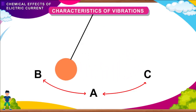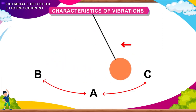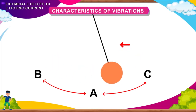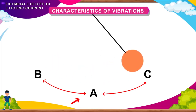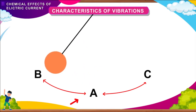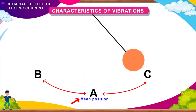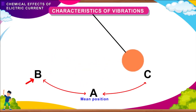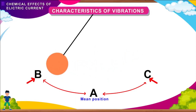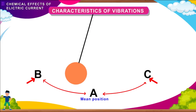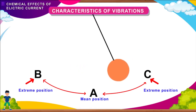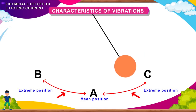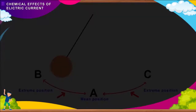We can make a pendulum by using a bob and a string. When the pendulum is at rest at position A, we call it the mean position. When it is moving, it oscillates between positions B and C, which are the extreme positions.